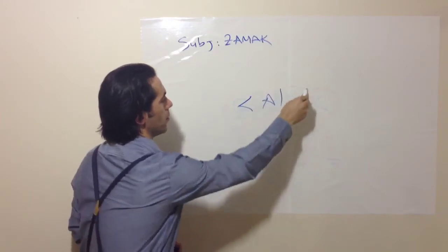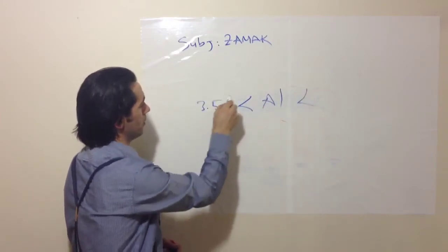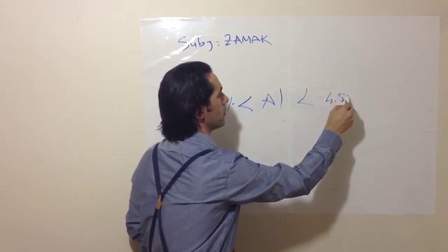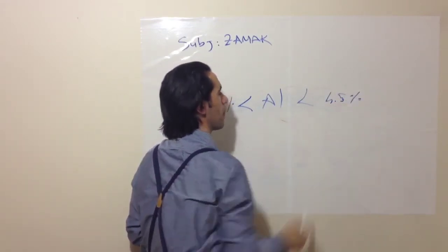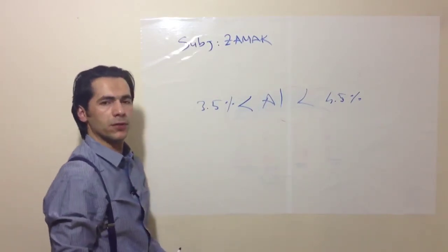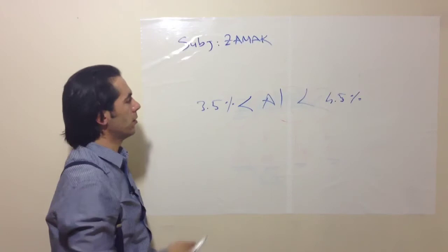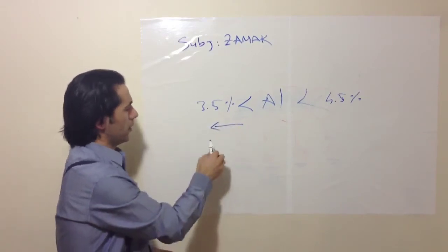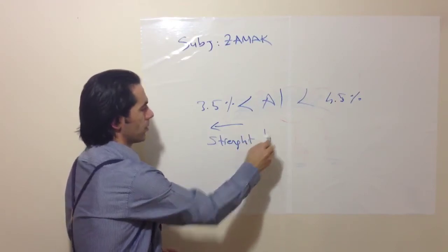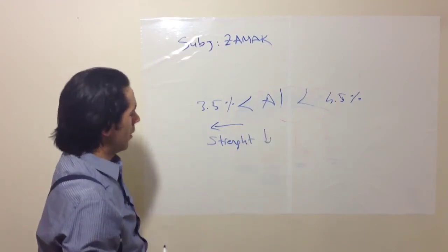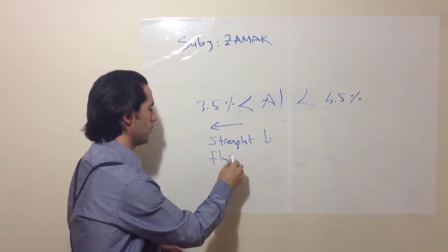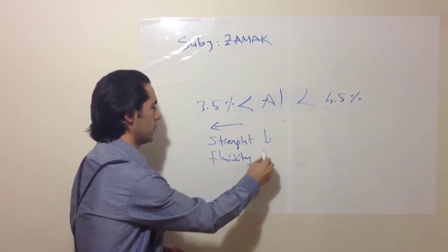This Aluminium, 3.5% to 4.5%. If we have less than 3.5% Aluminium in our alloy, strength goes down. Our viscosity and fluidity goes down.